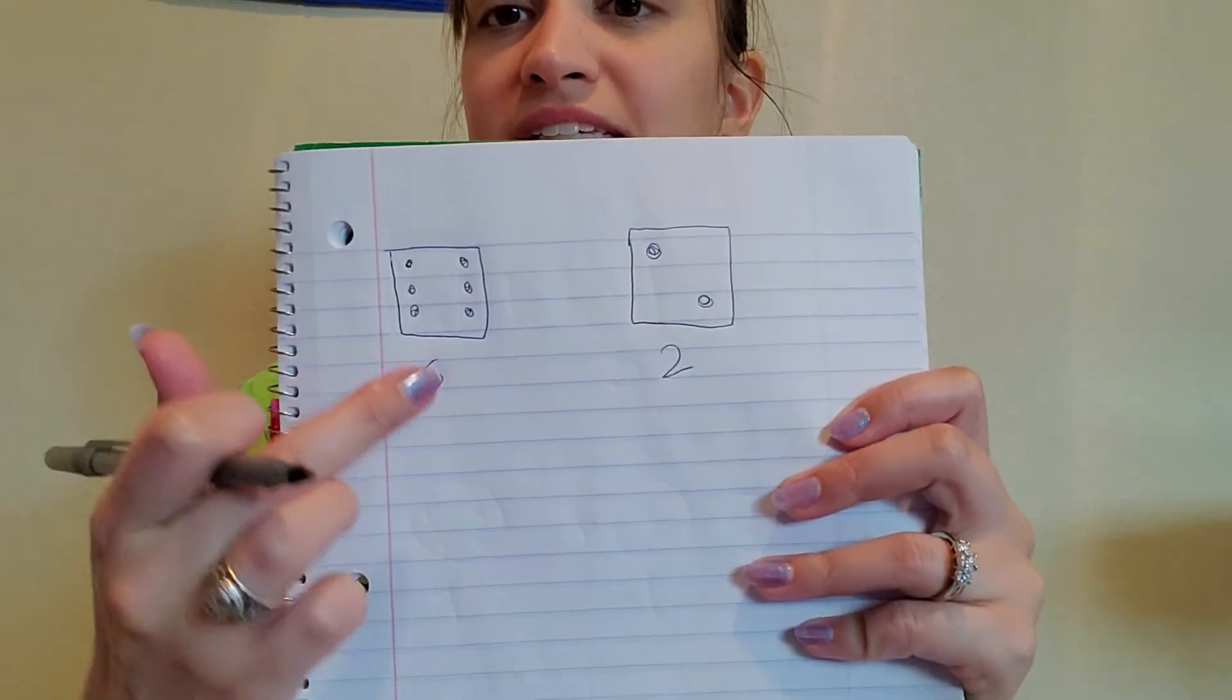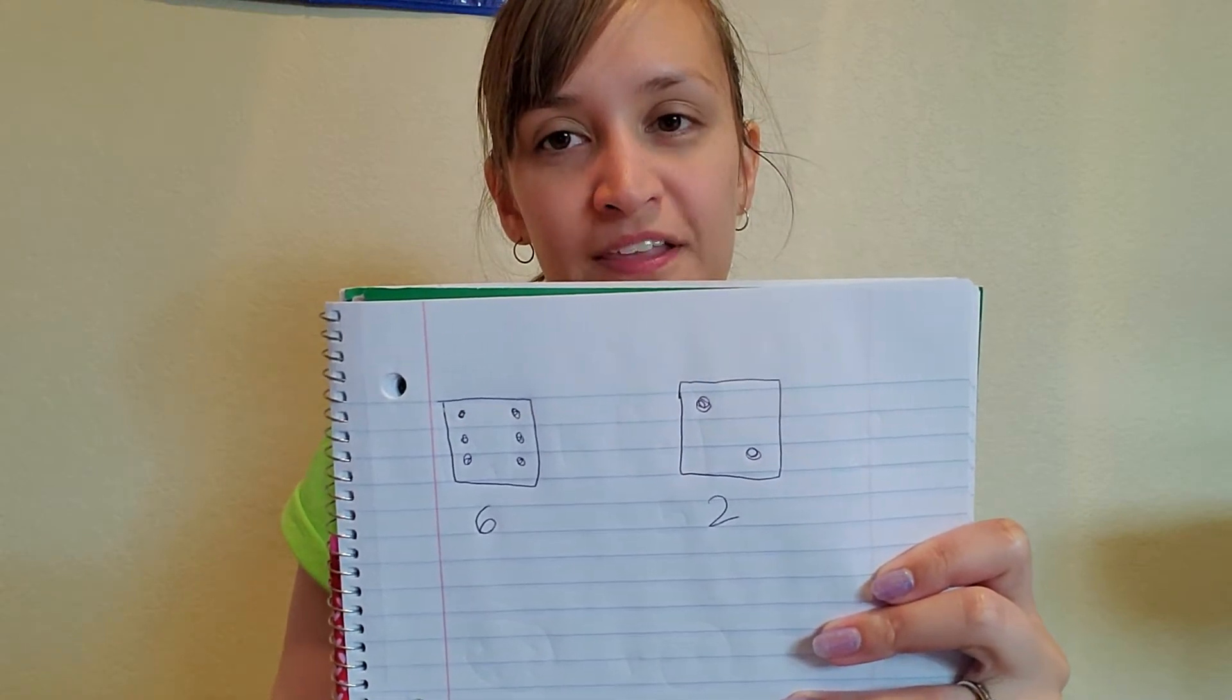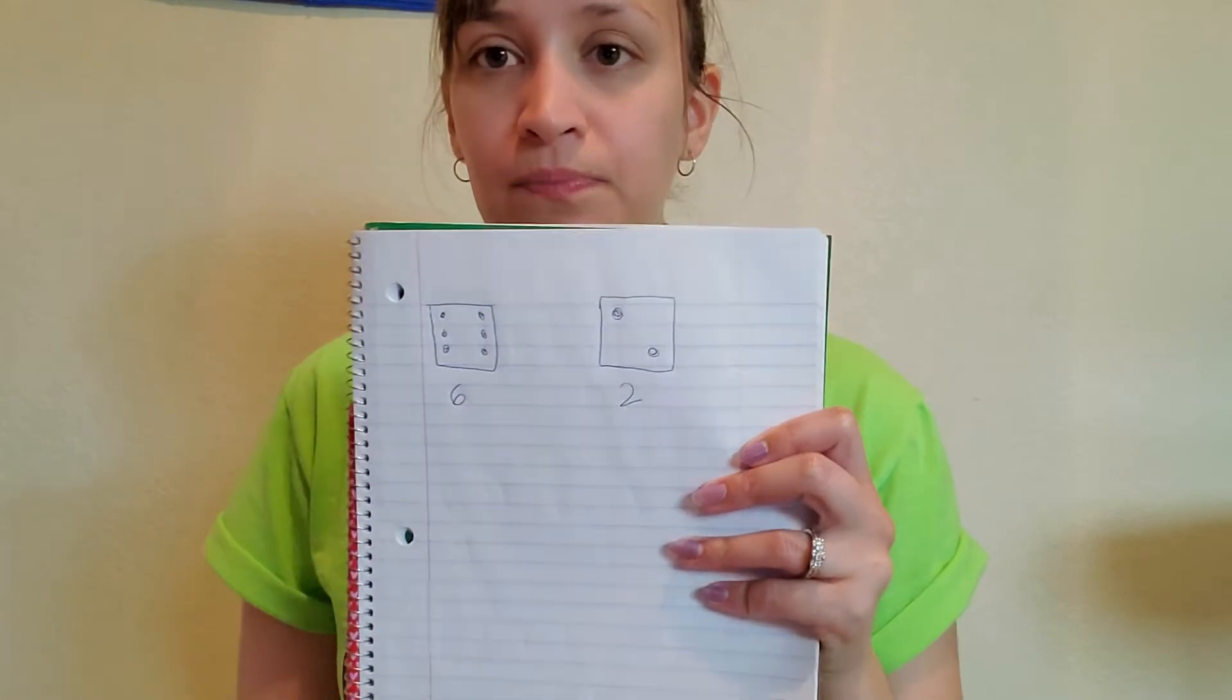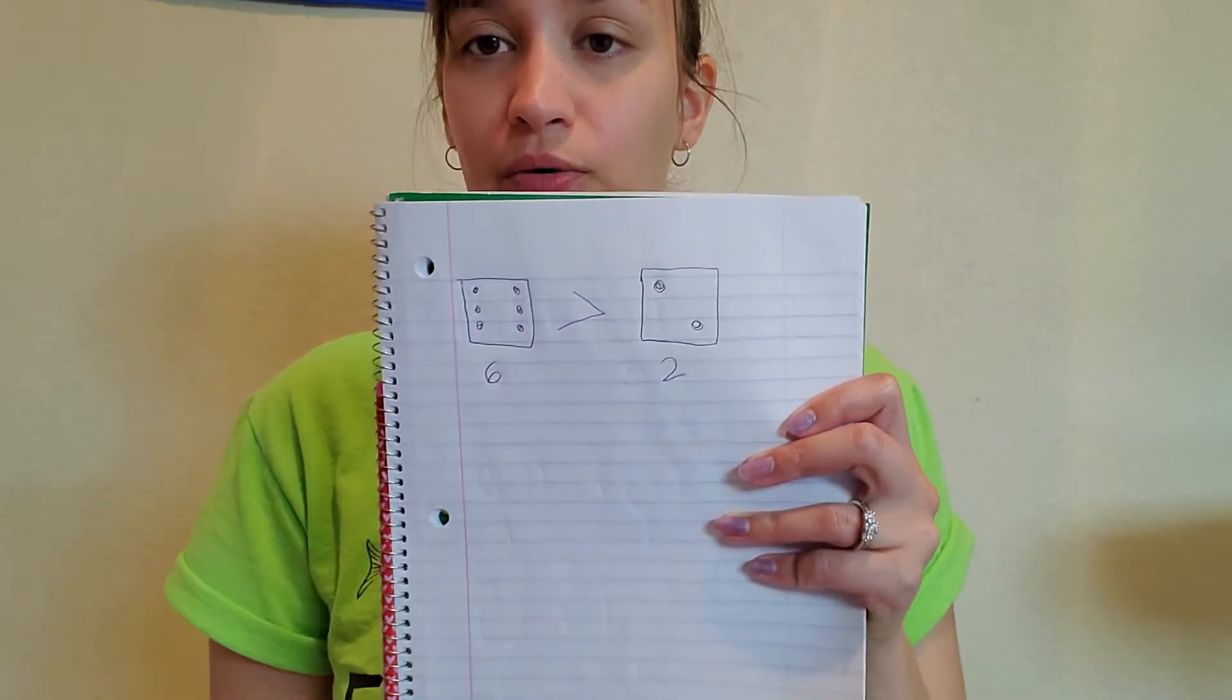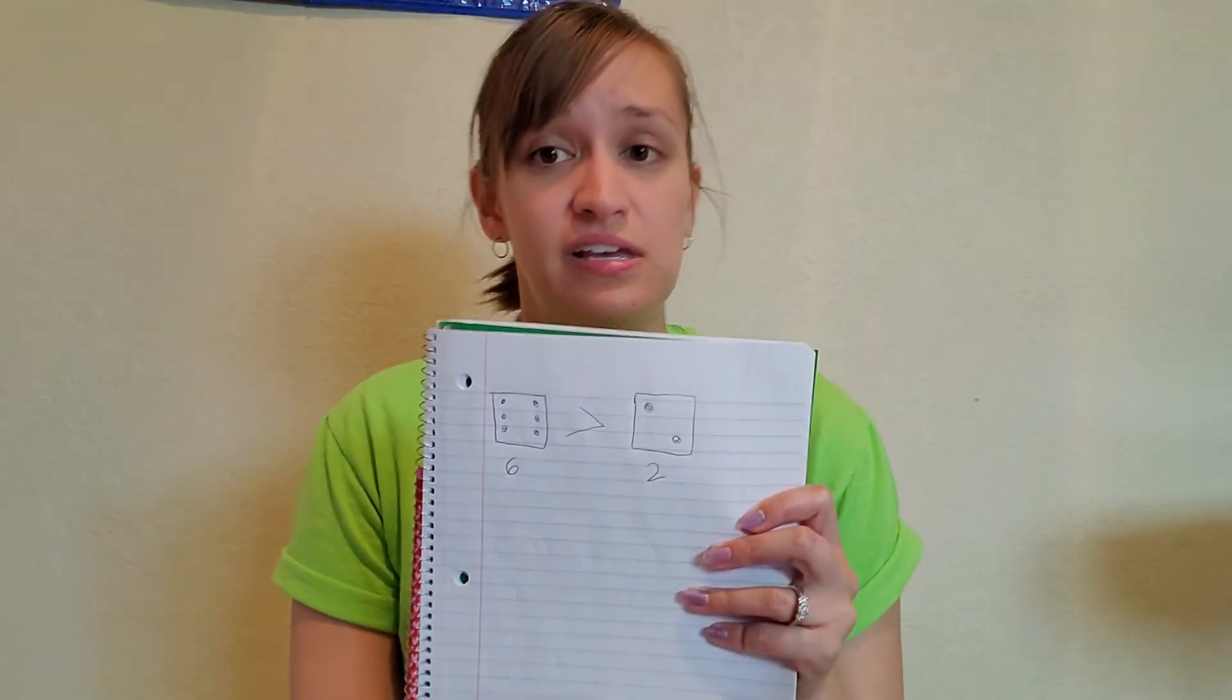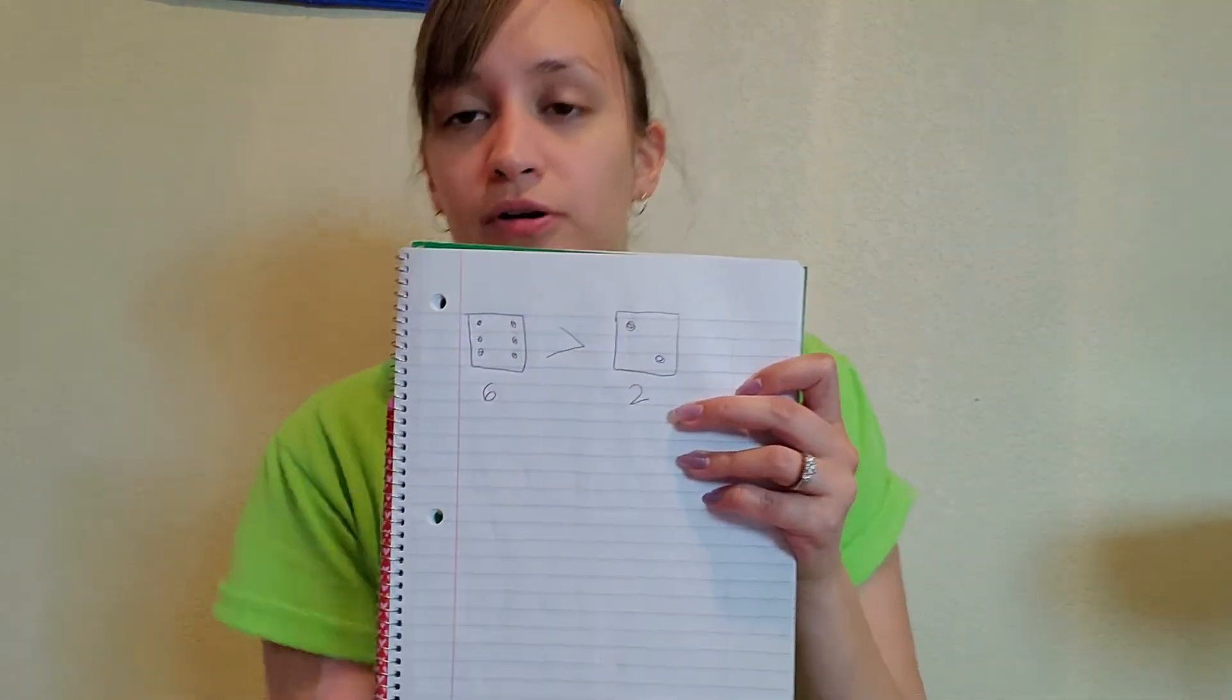So comparing six and two, which one is most? Six. Six is greater than two. So I look at it as you're trying to grab the bigger one. You're not even going to look at the smaller one. You're going to look at the bigger one and you're going to grab it because that's the one you want. Think of it as cookies. Do you want six cookies or two cookies? Because I don't know about you, but I want the most cookies.